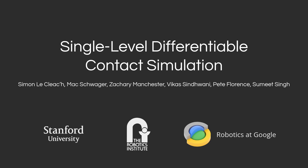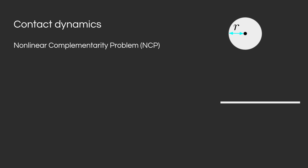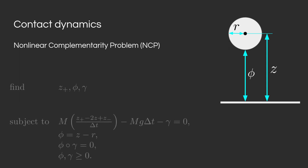In this work, we introduce single-level differentiable contact simulation. We start off by describing a simple contact dynamics scenario. We want to simulate a sphere making contact with the ground. To simulate this system forward in time by one time step, we can formulate a non-linear complementarity problem, or NCP.